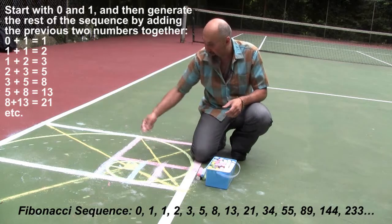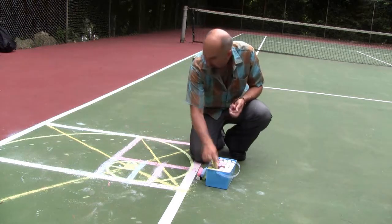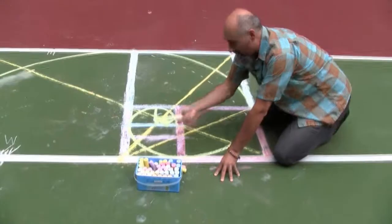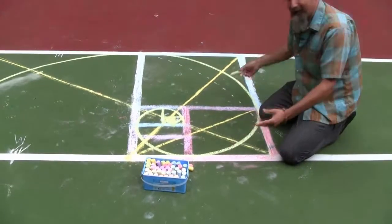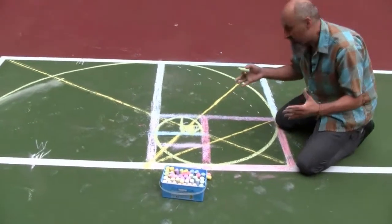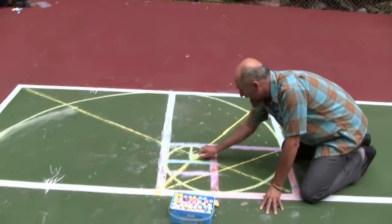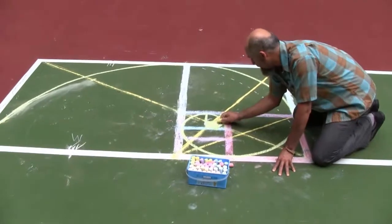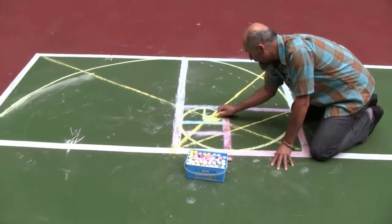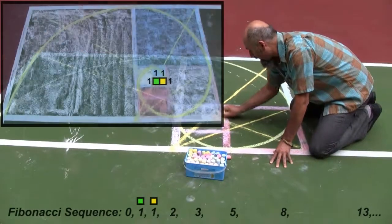So what we're going to do right now is shade in these things. So I'm just going to bring up my box of chalk, and what we're going to do is fill in these boxes so you see how the Fibonacci sequence works, right? So this guy is a one by one box. I'm going to use yellow and green for a one by one box.